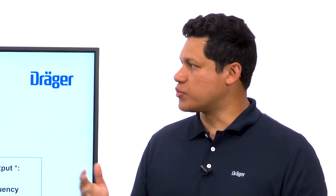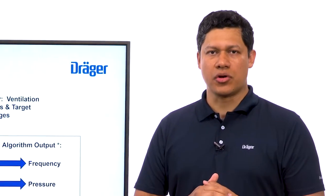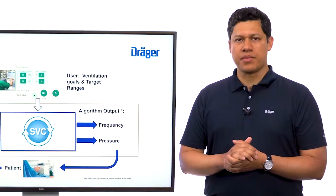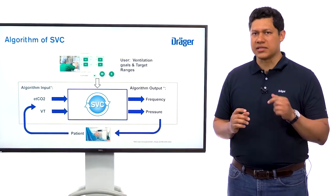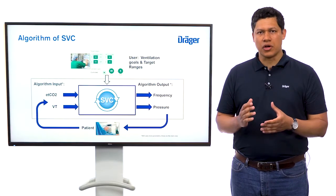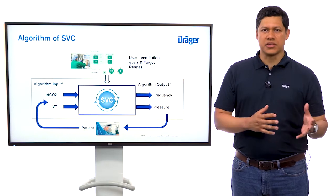The Smart Ventilation Control algorithm works as follows: the user must set targets for different ranges, which are the ETCO2 and the tidal volume. With the desired ventilation goal and target ranges, the algorithm will control the frequency and the pressure delivered to the patient.